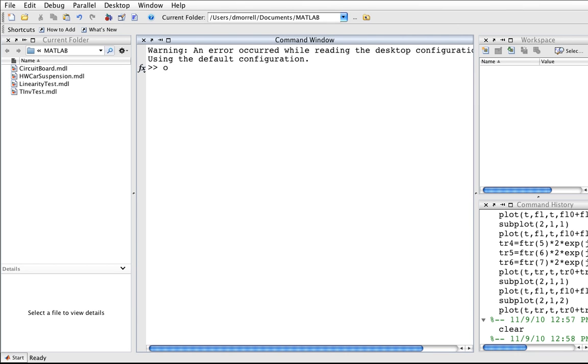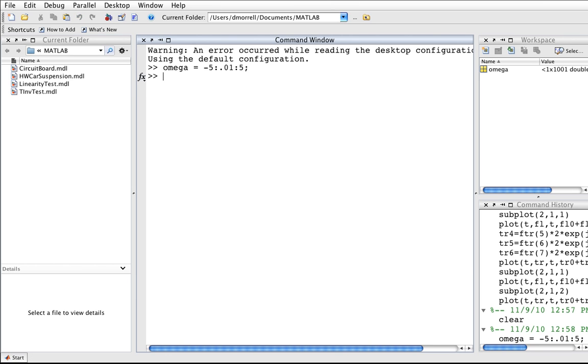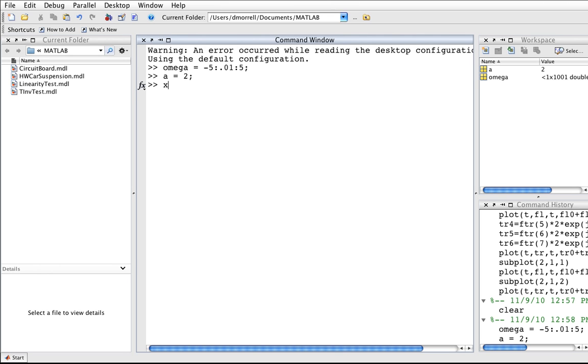The first thing we're going to do is define omega to be a vector of values from about minus 5 to 5. We'll define a to be equal to 2, seems like a nice value for a. And then we'll define x of omega to be 1 over j times omega plus a.